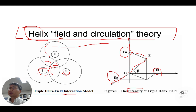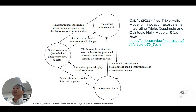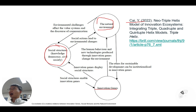This is co-evolution. There are social structures: knowledge, democracy, civil society, and innovation genes, natural environment. Professor Kai proposes a neo-triple helix model of innovation ecosystem, replacing the traditional triple helix of university, industry, and government with natural environment, social structure, and innovations. He expanded this model with traditional triple helix spheres — consensus space, knowledge space, and innovation space.